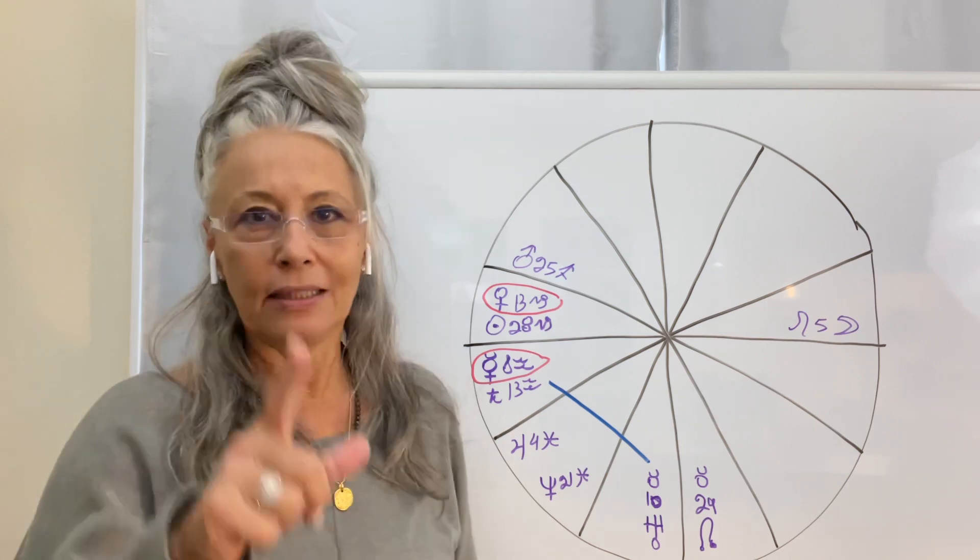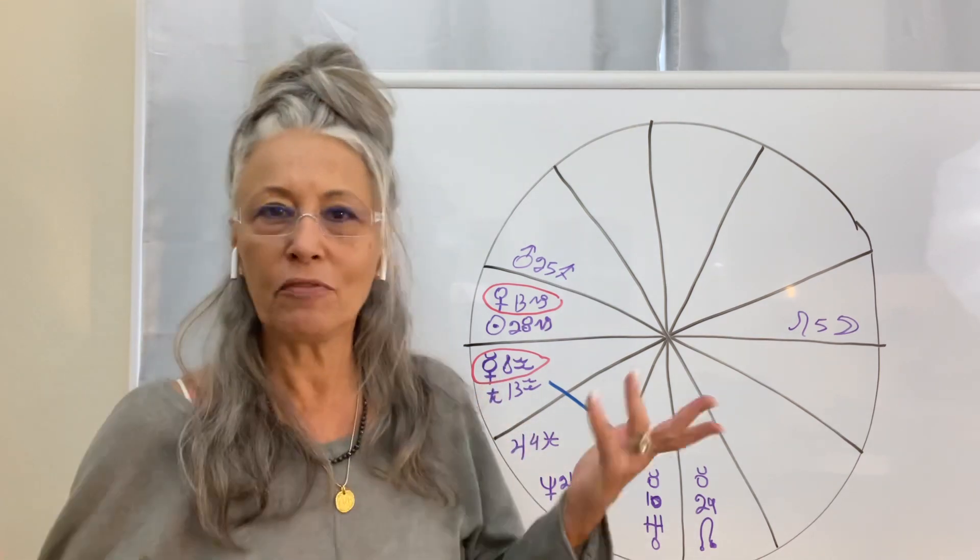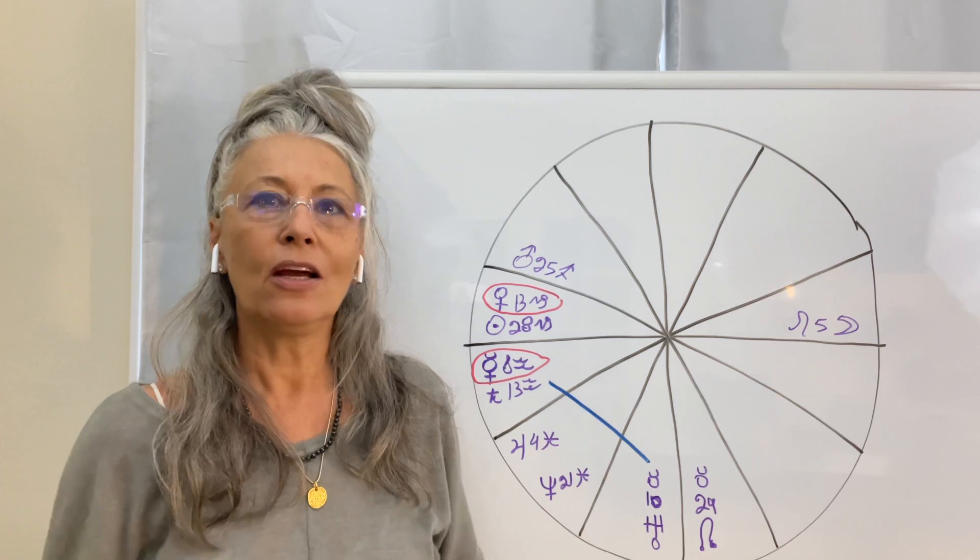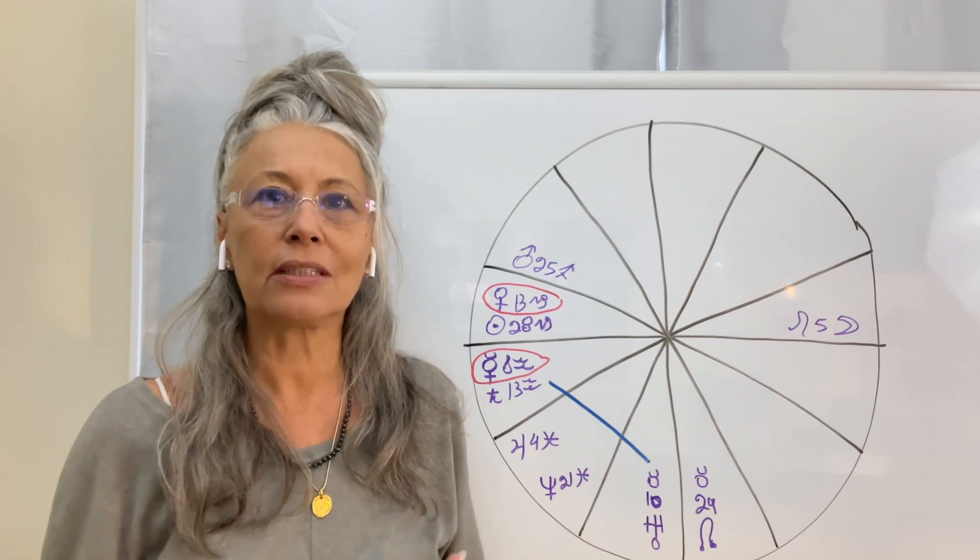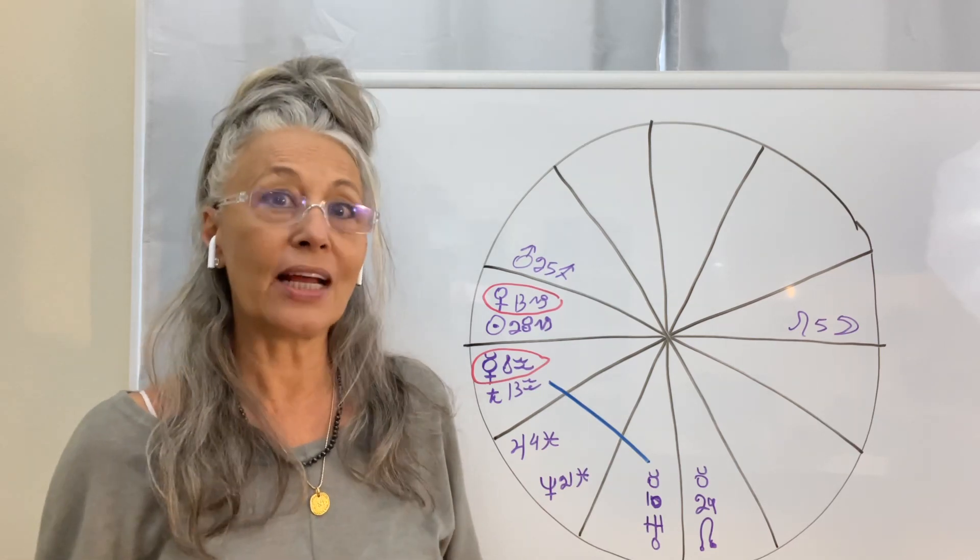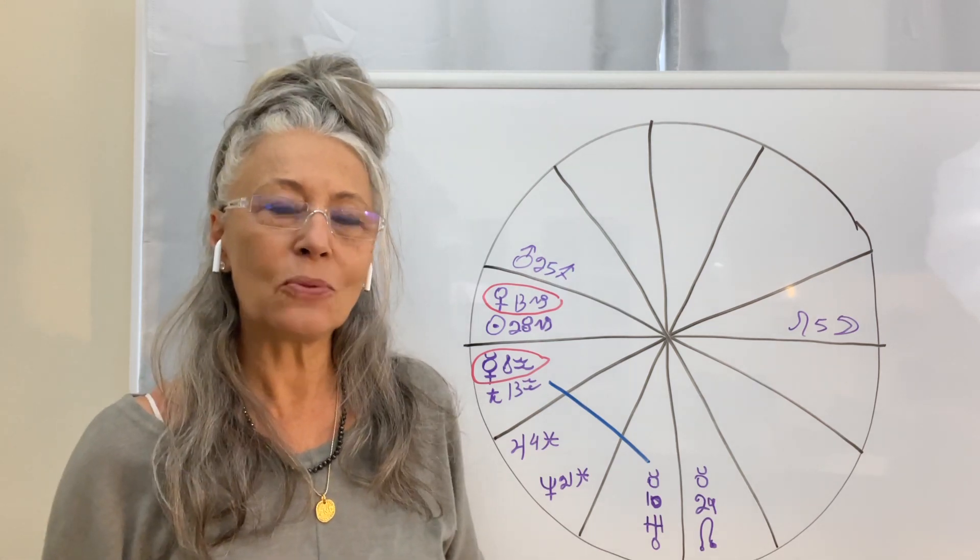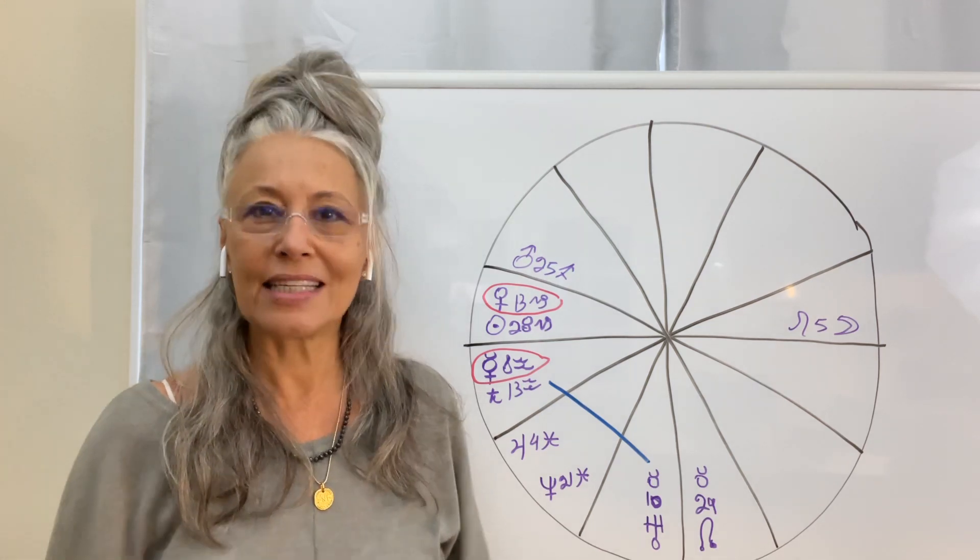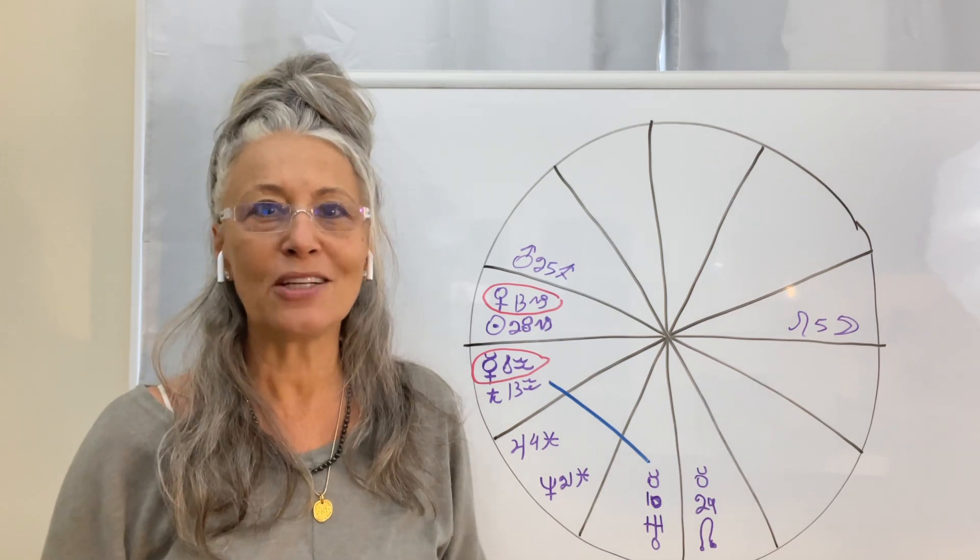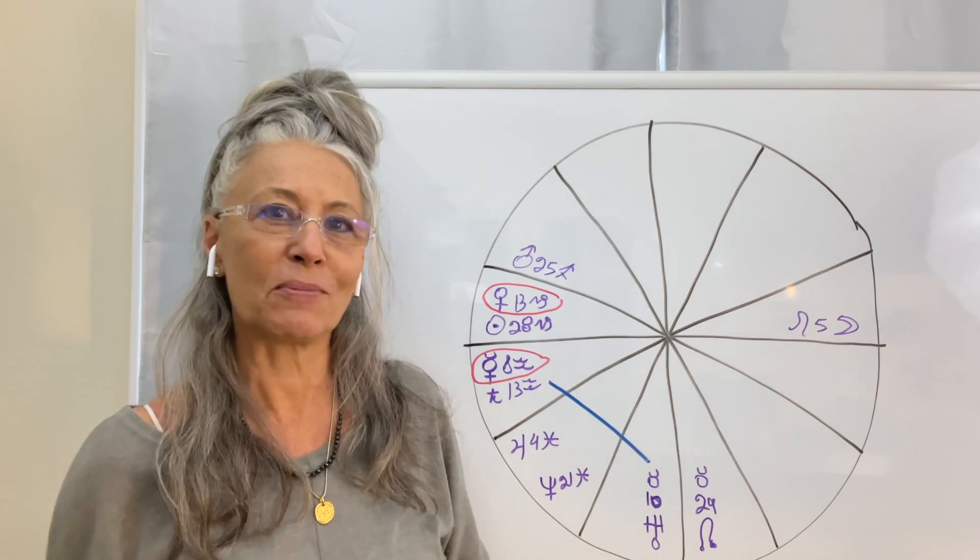Now, Uranus is still in the square with Saturn. We've been feeling it for a year and a half now and they've been urging us to create change in our system, in our structure and bring up something new. But look, sometimes there are those days when the sky is just singing in a symphony and today is one of those days and I want to show you some stuff that's going on.